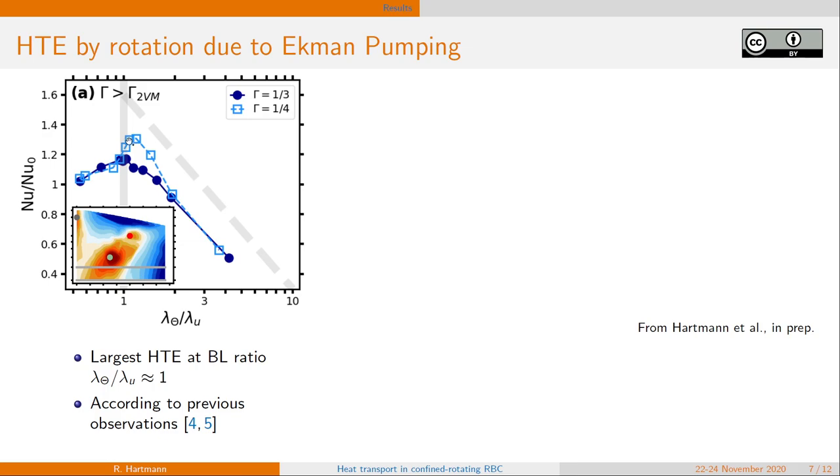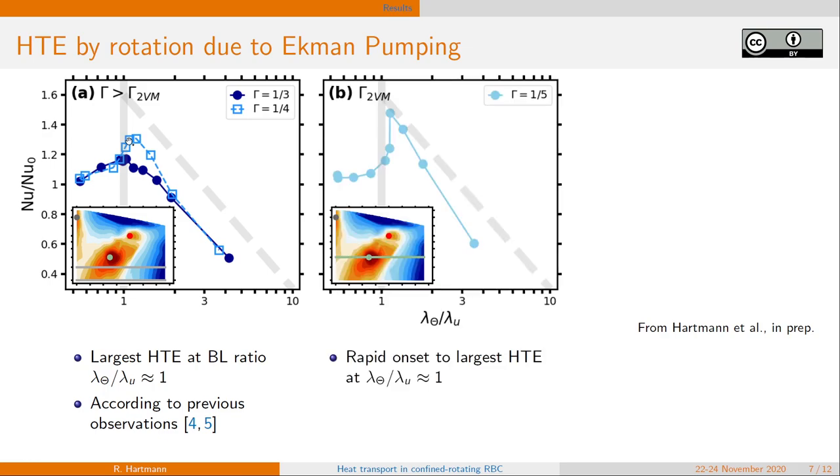Now we are approaching the aspect ratio at which our double vortex maximum is obtained. And there we still get the maximum heat transport enhancement at a boundary layer ratio of approximately one. But now we observe a very rapid or sharp onset of these heat transport enhancements at boundary layer ratio of approximately one.